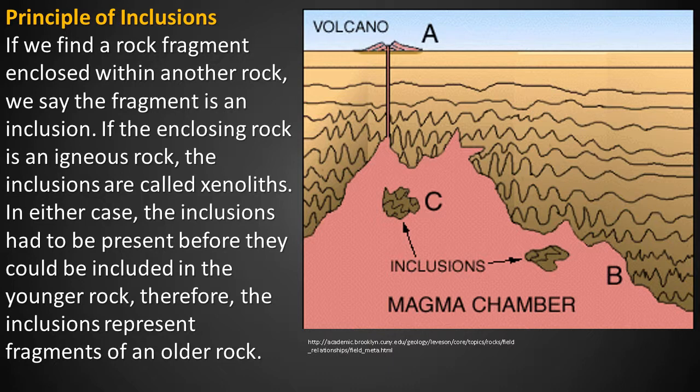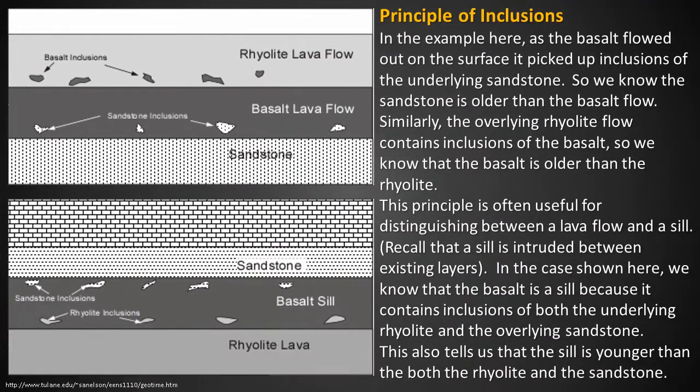The inclusion had to be present before it could be included in the younger rock; therefore, inclusions represent fragments of an older rock. As the basalt flowed out on the surface, it picked up inclusions of the underlying sandstone, so we know the sandstone is older than the basalt flow. Similarly, the overlying rhyolite flow contains inclusions of the basalt, so we know the basalt is older than the rhyolite. This principle is often useful for distinguishing between a lava flow and a sill.